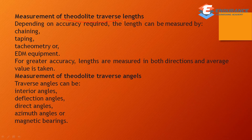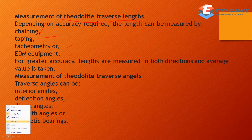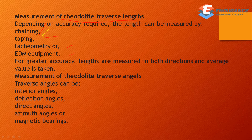For theodolite traverse, the measurement of length depends on the accuracy required. The length can be measured by chaining, taping, tachymetry, or EDM equipment. If you want to measure the length with greater accuracy, you can measure the length in both directions and calculate the average or mean value.